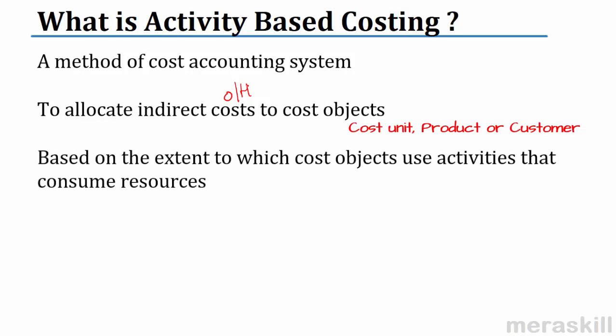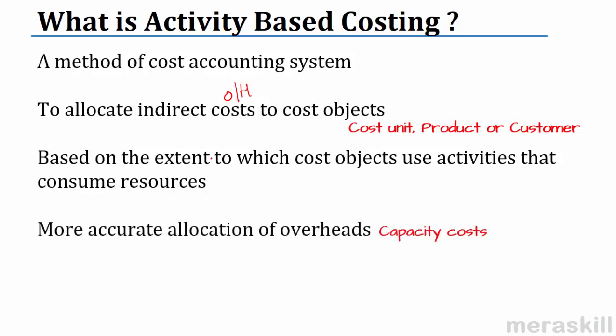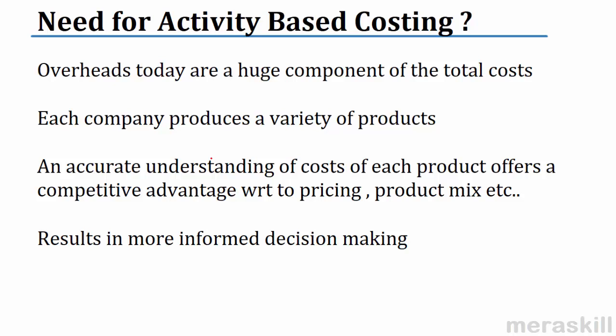What is the difference? In the traditional method also, we were absorbing overheads based on some departmental rate. Now here also we absorb the overheads, but based on the extent to which the cost object uses activities which consume the resources. Resources are what is paid for, and the activities determine how those resources are consumed. This results in a more accurate allocation of cost because it is activity-based.